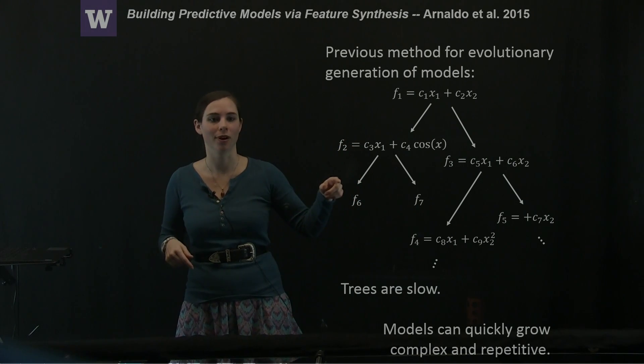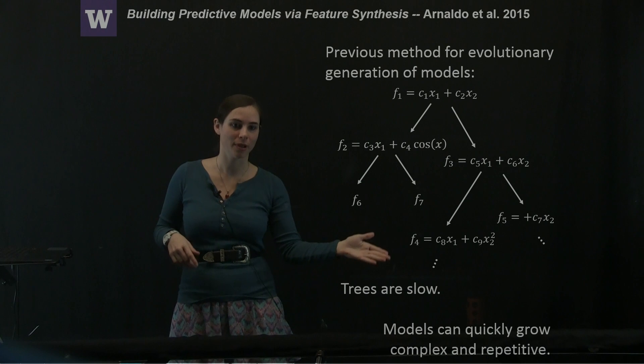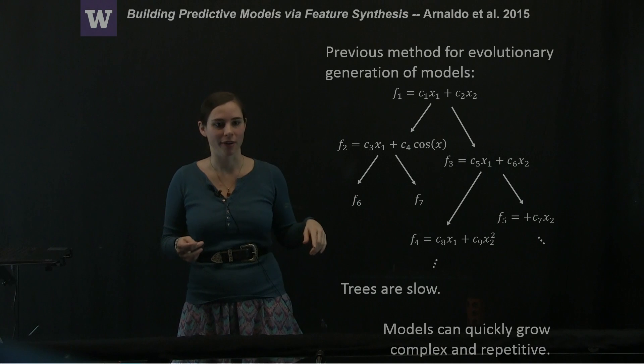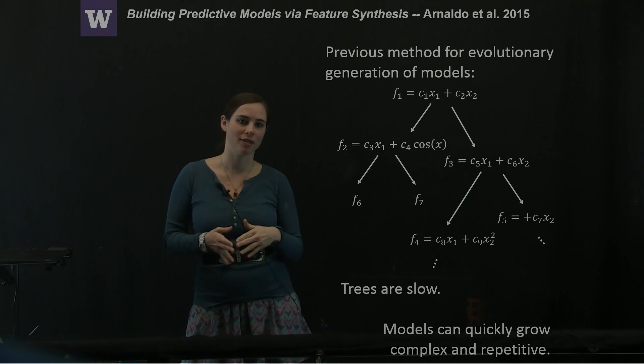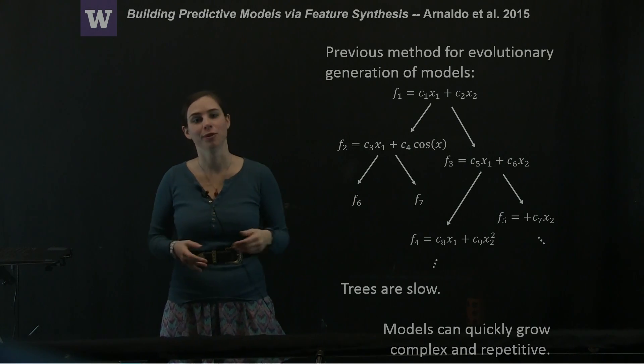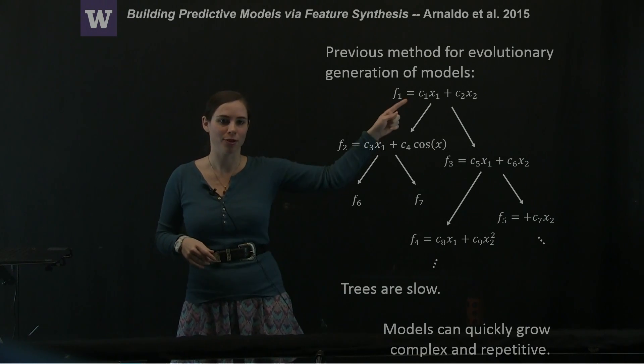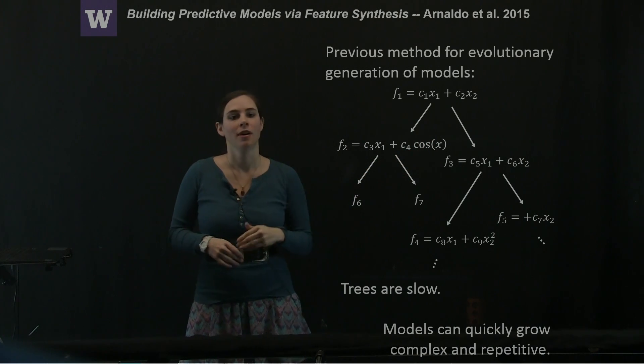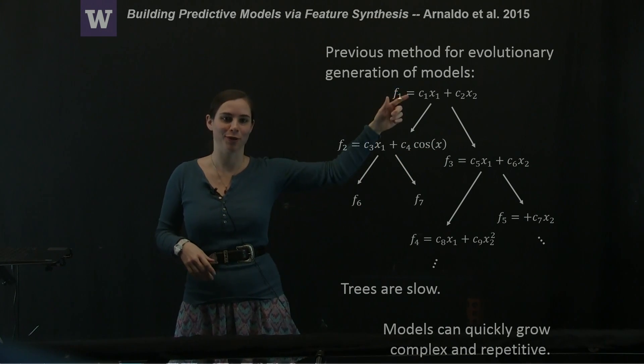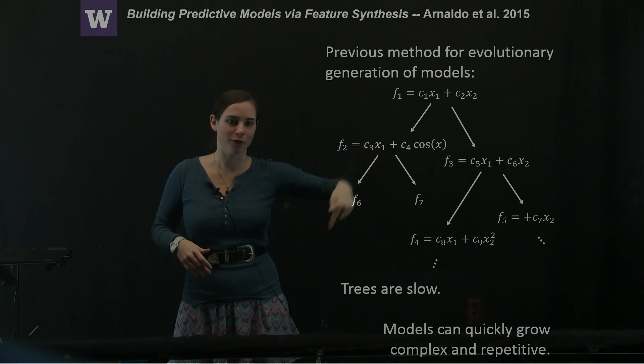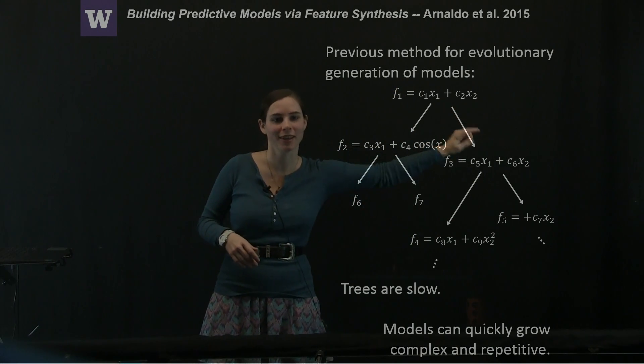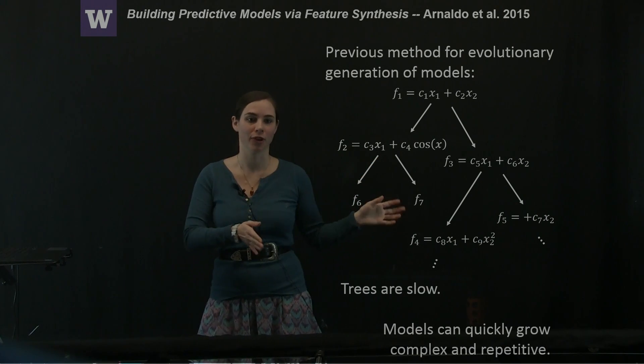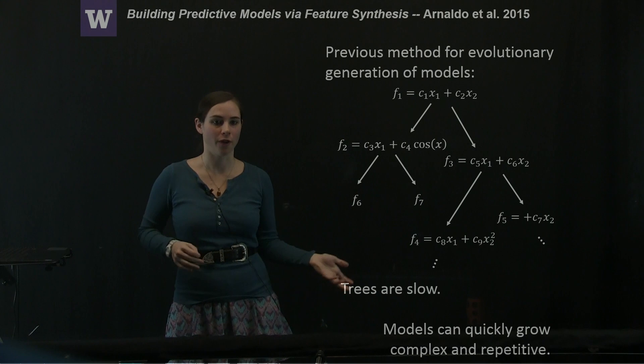And then they mutate and generate a new subset of models. Each generation is then of models that are compared against each other. Often this method is done using a symbolic evolutionary type method where you're symbolically storing these model structures at each step. Then when you want to evaluate you have to go down every branch of the tree to compare, and this can get very complex very quickly after a few generations.